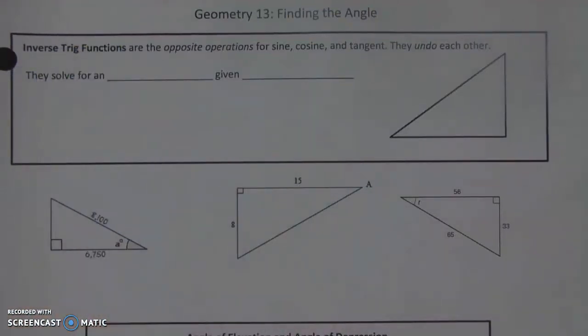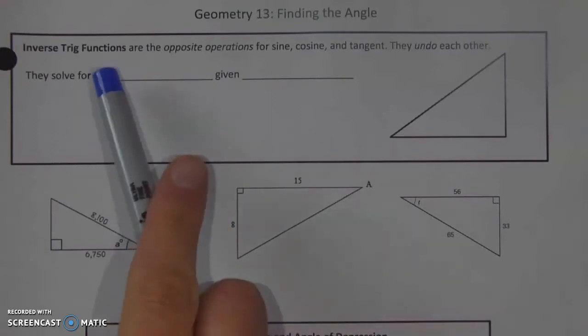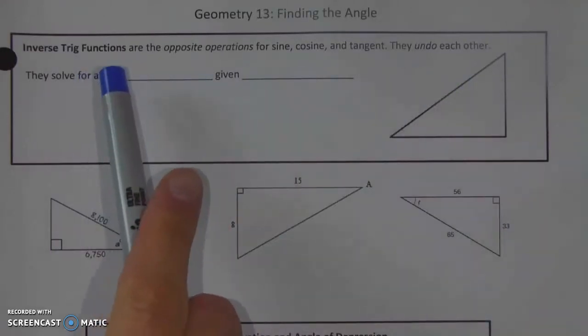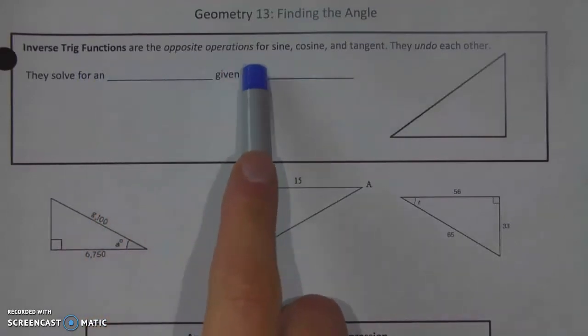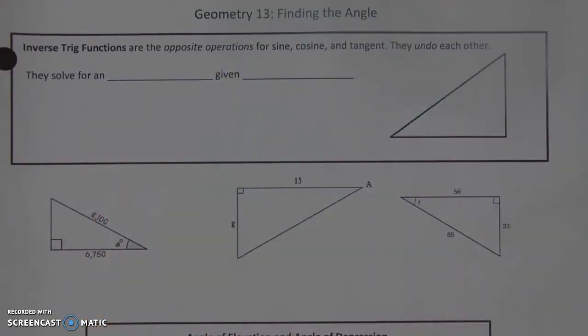Trig functions are cosine, sine, and tangent at this point. They're all those functions that we learn to do with trigonometry. They're the foundation of trigonometry. So inverse trig function, according to the definition, makes it the opposite operation for sine, cosine, and tangent. They undo each other.